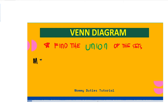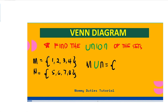For our next example, we have Set M with elements 1, 2, 3, and 4, and Set N with elements 5, 6, 7, and 8. We find the union of M and N — the set of elements which are in Set M or in Set N or in both. Therefore, M union N is equal to {1, 2, 3, 4, 5, 6, 7, 8}.